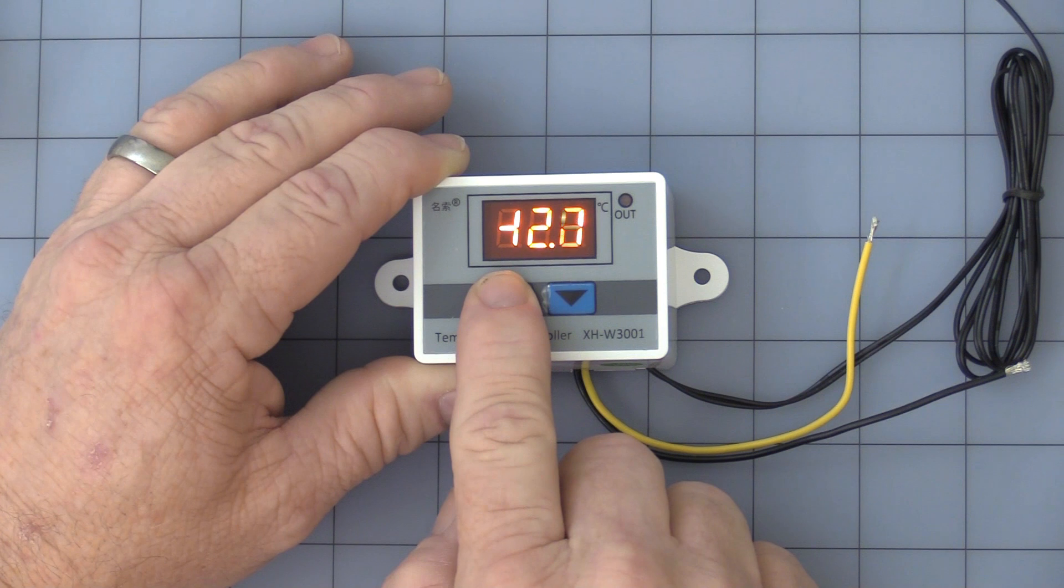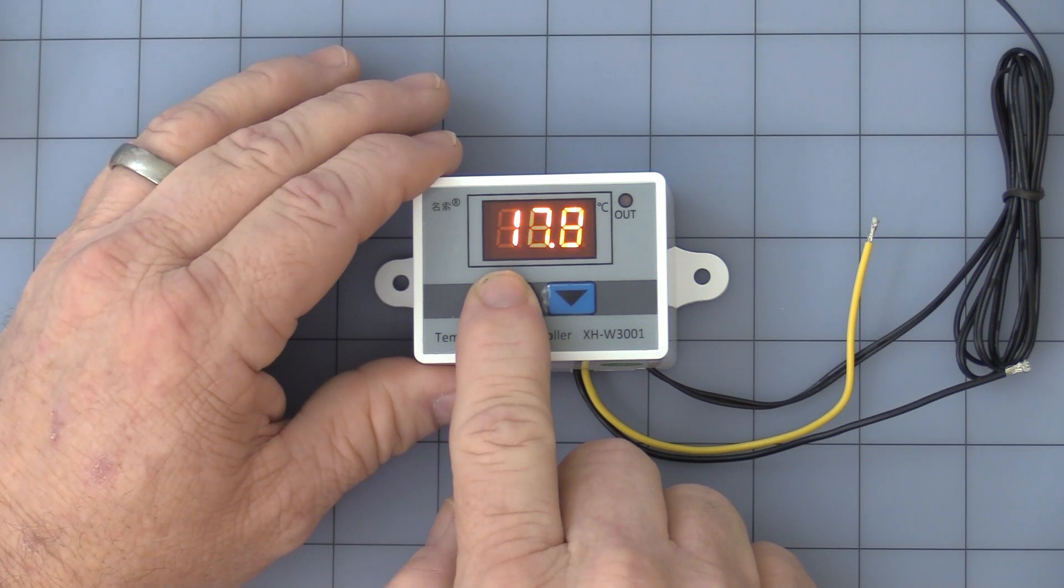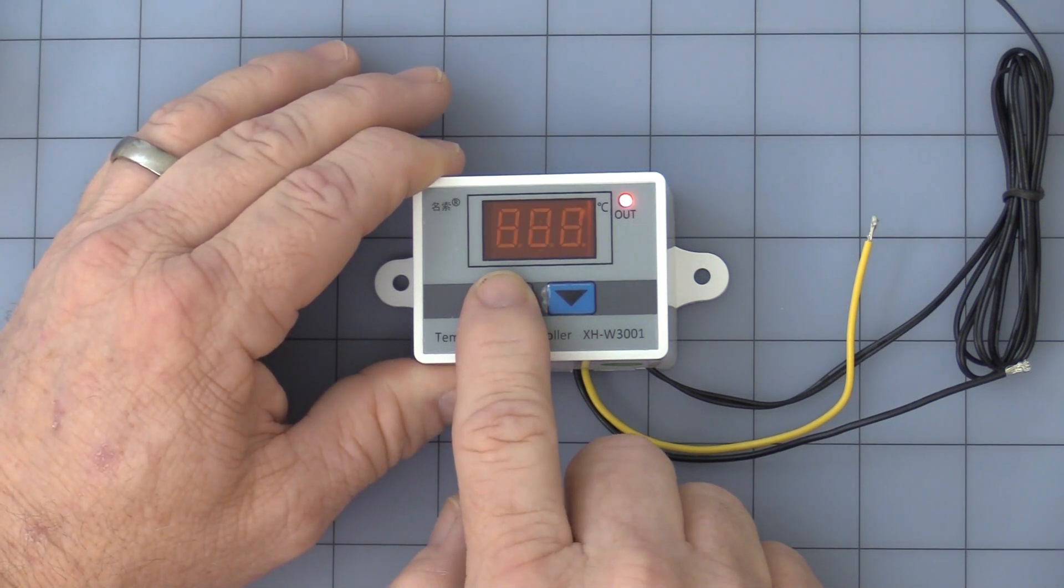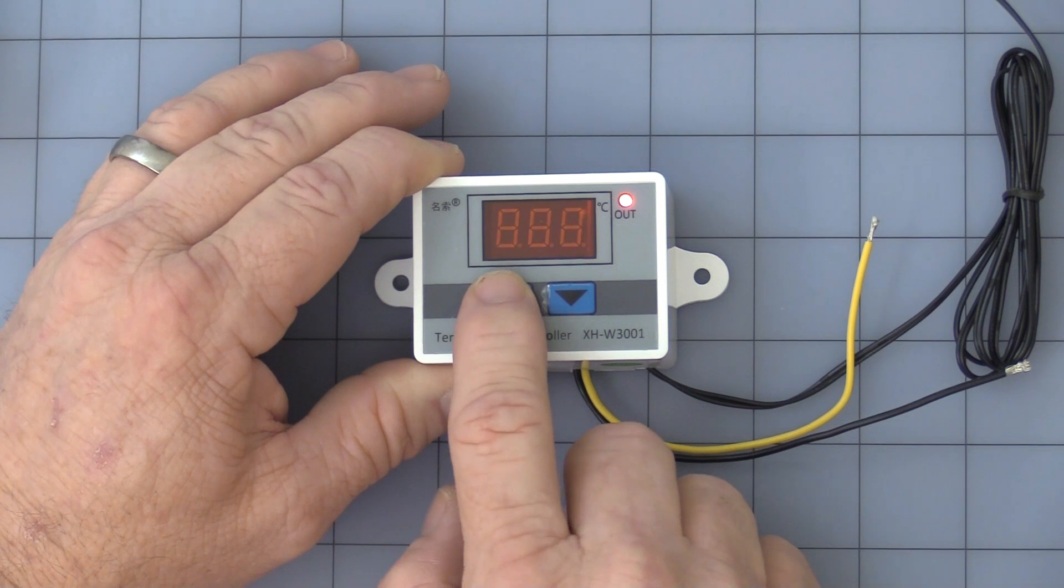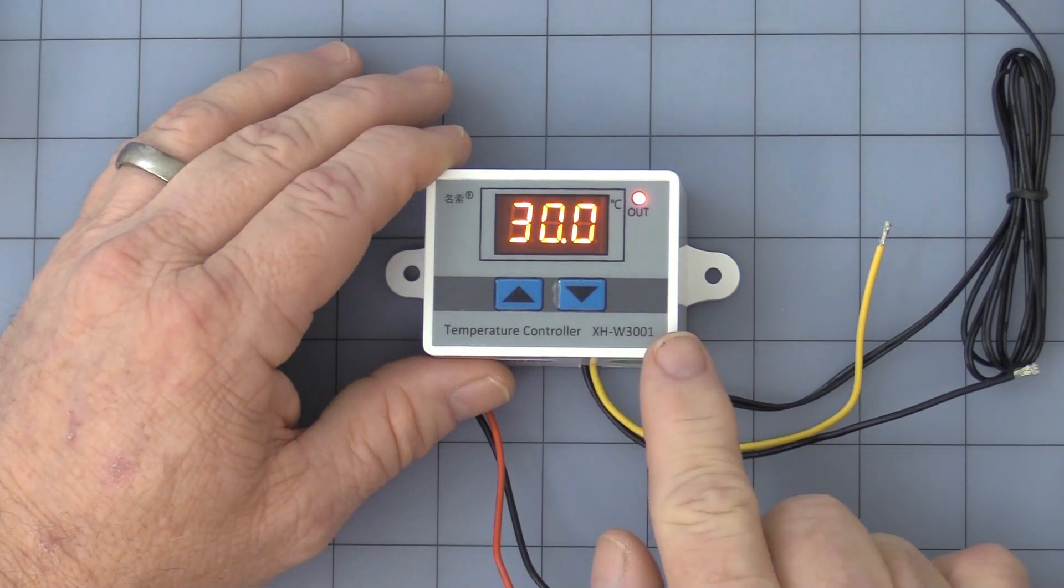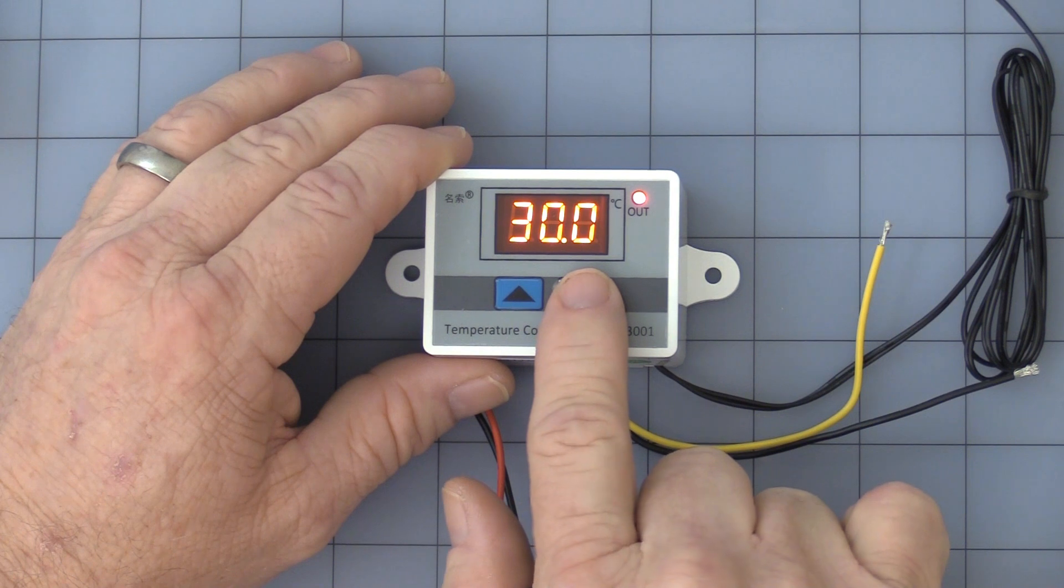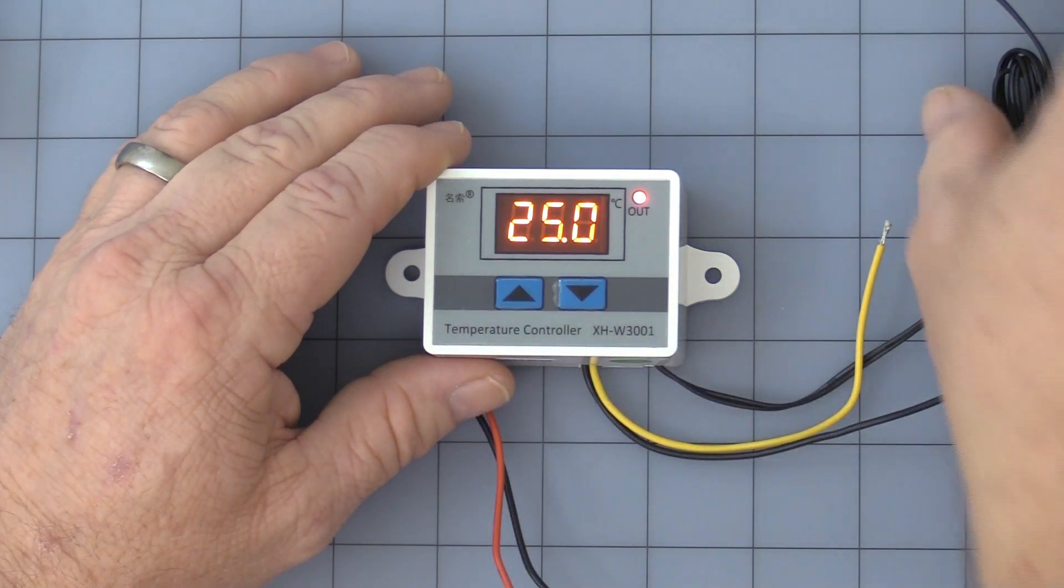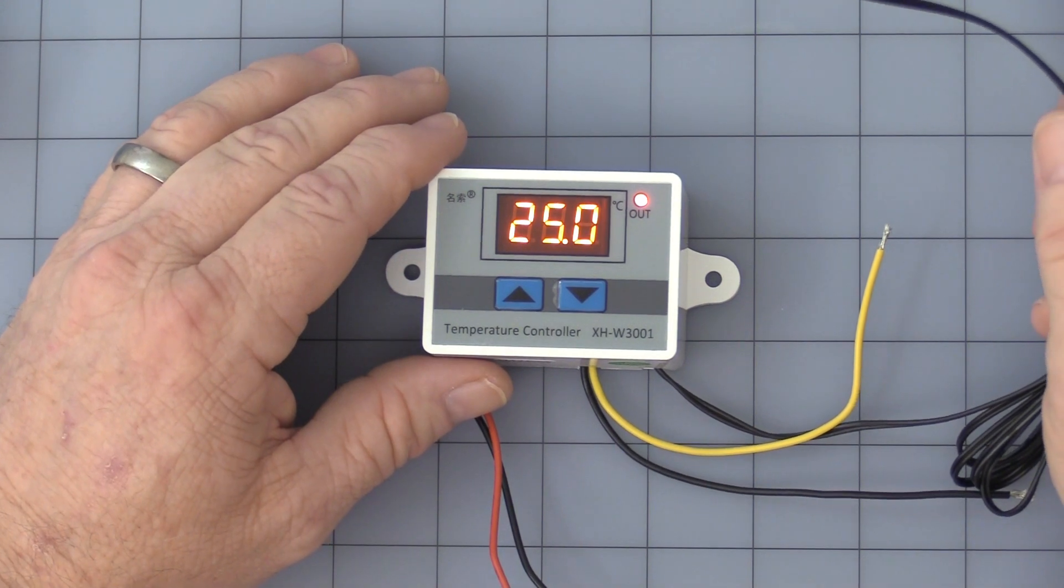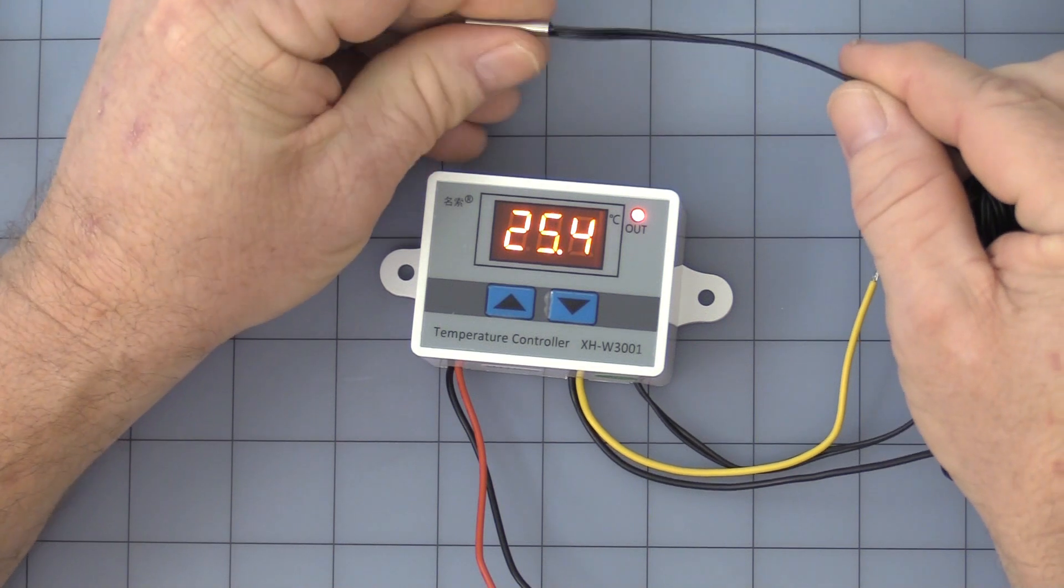But I want to set this at about 30 degrees Celsius just so I can show it operate, how the operations, how it works. And you take single steps. Alright. So this setting, once it stops flashing, that's actual air temperature. Upper end is 30, lower is 25. So this is the heating mode. So when I warm this thermostat up to over 30, it should turn the relay off.